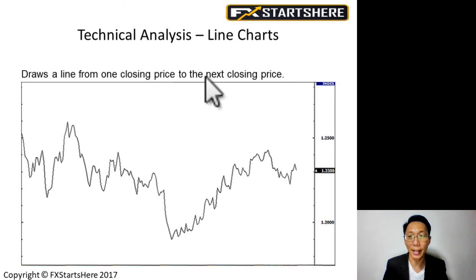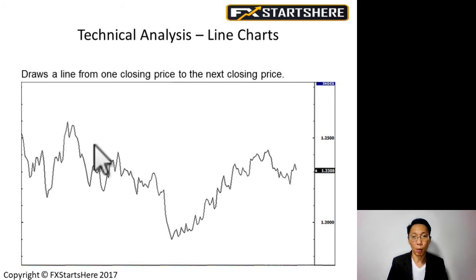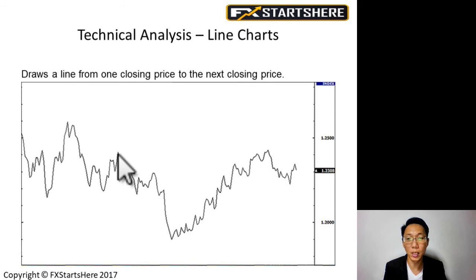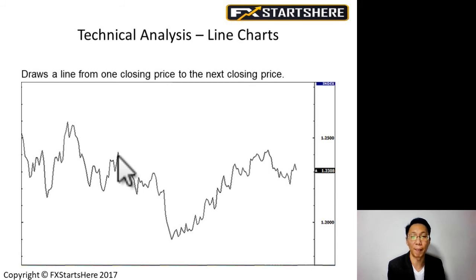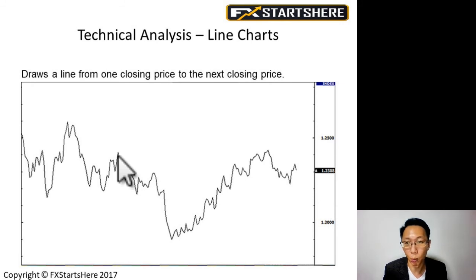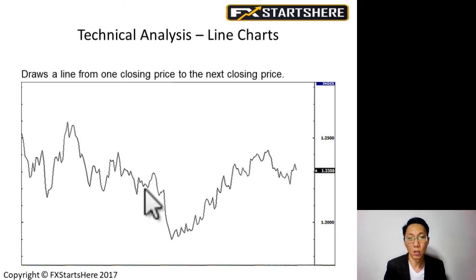Line charts are drawn by connecting one price point to another. The most commonly used price point is the closing price. So on an H1 (hourly) line chart, you take the closing price at 1pm, 2pm, 3pm, 4pm, and so on, then draw a line from one closing price to the next. That's how you get a line chart — one of the very first and most basic types of charting.